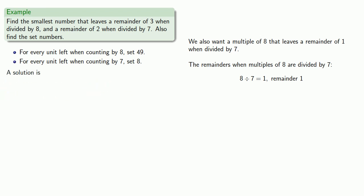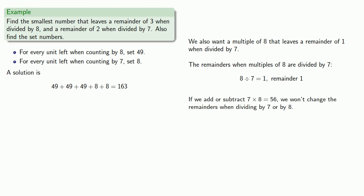For our solution: we have a remainder of three when divided by eight, so we'll set down three forty-nines. We have remainder two when divided by seven, so we'll set down two eights. We'll add them up. If we add or subtract seven times eight — fifty-six — we won't change the remainders when dividing by seven or eight. So we can reduce the solution by fifty-six repeatedly to get smaller solutions, and we find our smallest solution is fifty-one.